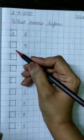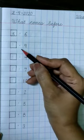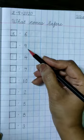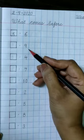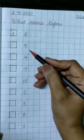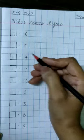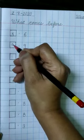Then again make a box. Put a dot and write number 9. What comes before 9? 8-9. 8 comes before 9. So write 8 in this box.